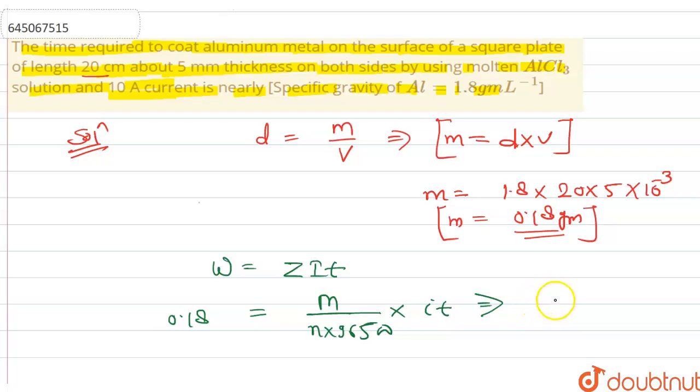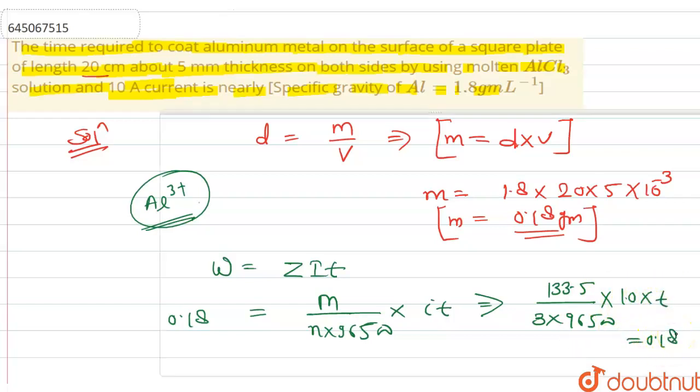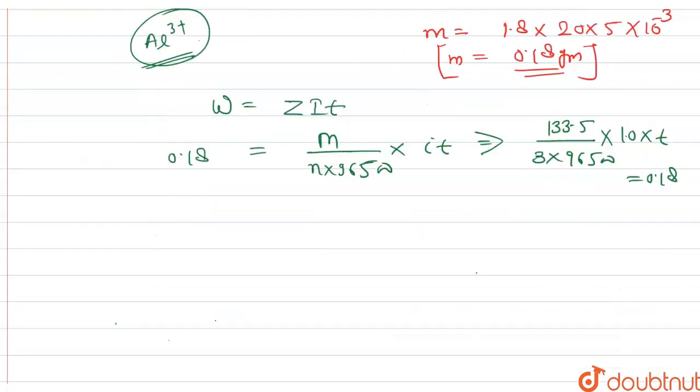And z equals m upon n-factor into 96500, that is Faraday, into i into t. Put the values: molar mass of AlCl3 is 133.5 grams per mole upon n-factor. Because of AlCl3 that is having Al³⁺ after decomposition, so n equals 3 into 96500 into current 10 ampere into t equals 0.18.